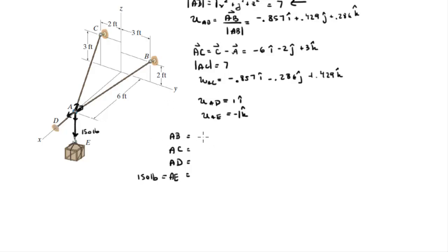So the Cartesian vector form of each of these vectors is the unit vector times the magnitude. Therefore, the Cartesian vector form of a, b is negative 0.857 times a, b in the i plus 0.429 times a, b in the j plus 0.286 a, b in the k. I just multiplied a, b by the unit vector a, b given right here.